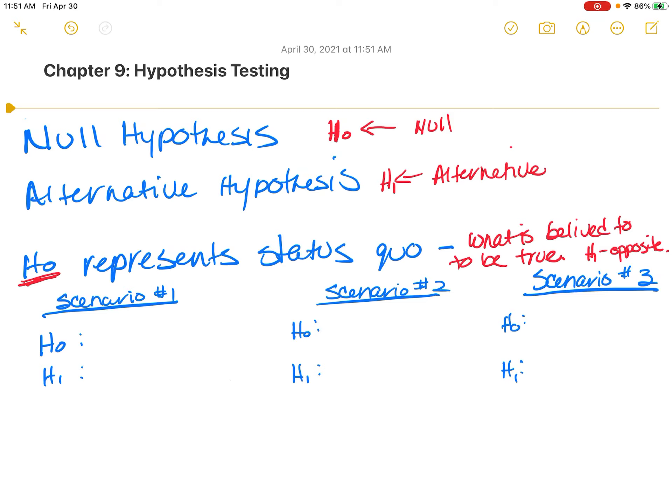So scenario one - there are three scenarios that we're going to cover in terms of hypothesis. The first scenario is the mean is equal to X. So we believe the mean of something is equal to X. The alternative is the mean is not equal to X.